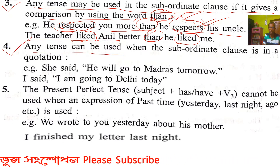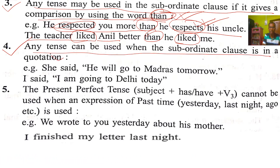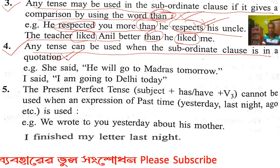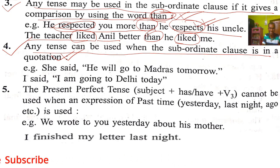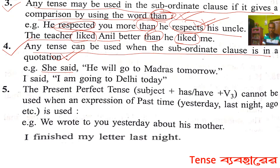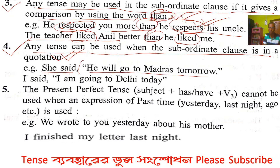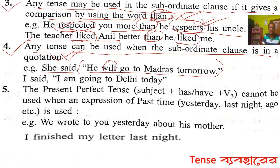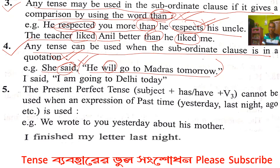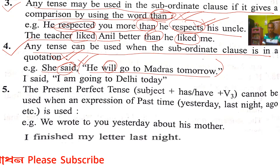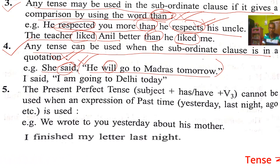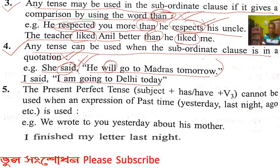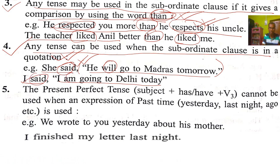Rule 4: Any tense can be used in the subordinate clause when it is in quotation marks — inverted commas. The tense does not change in that case. Example: 'I said, I am going to Delhi today.' The subordinate clause here is in present continuous tense, and it remains present continuous tense because it is within quotation marks.